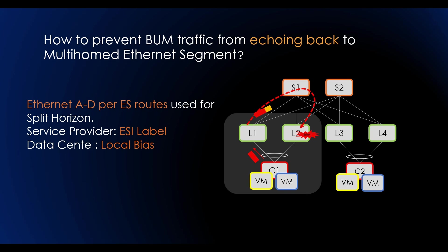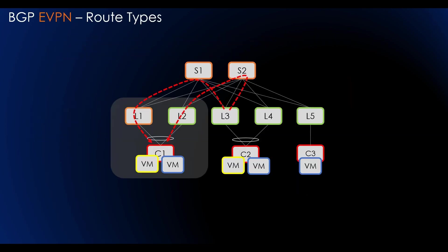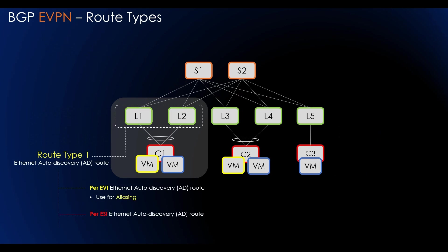So EVPN route types: we have route type 1, which is Ethernet auto-discovery route. Per EVI, Ethernet AD route is being used for aliasing. Per ESI, Ethernet auto-discovery route is being used for split horizon and mass withdrawal.